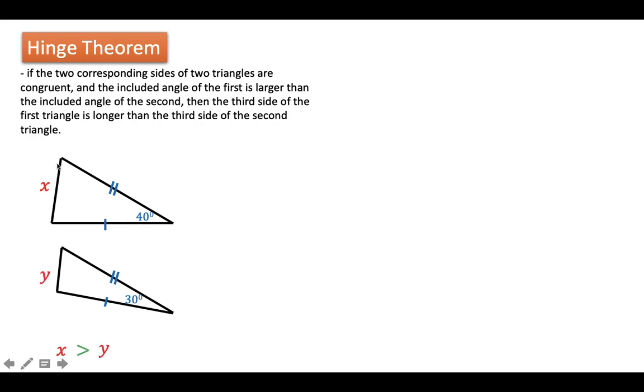So whatever the measure of x, that is longer than the measure of y because the angle opposite to this side is also greater than the angle opposite to y.